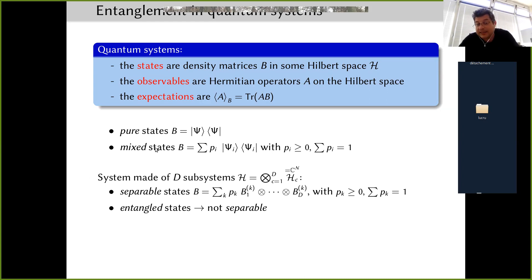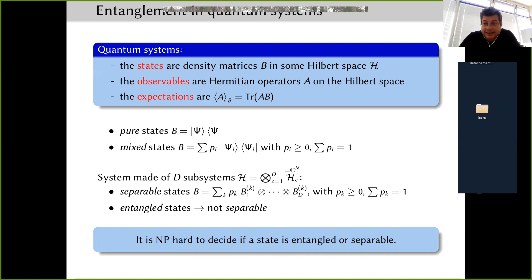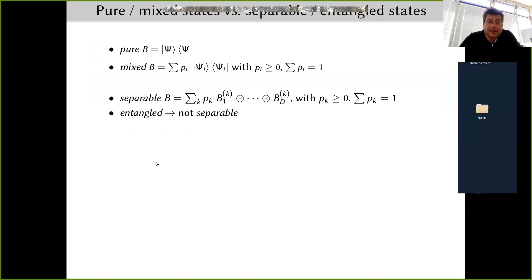Whereas it is relatively easy to detect whether a state is pure or mixed, because you can easily see if a matrix is a one-dimensional projector or not, it is much harder to decide whether a state is entangled or not. Deciding, given a state, whether it is entangled or separable is a very hard computational problem, so people are searching for criteria to detect entanglement.